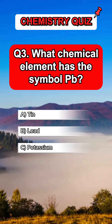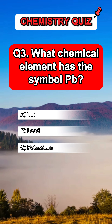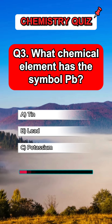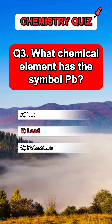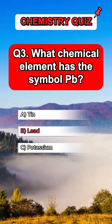Question 3. What chemical element has the symbol Pb? Answer B. Lead.